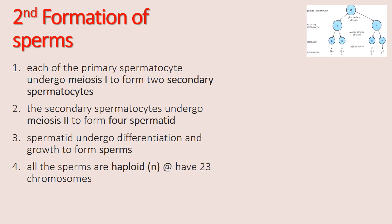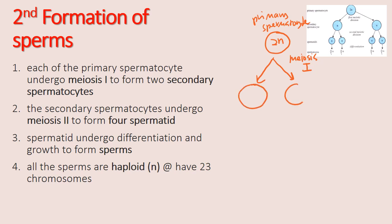Each of the primary spermatocytes formed by the growth process of the spermatogonia will undergo meiosis one to form two secondary spermatocytes. This primary spermatocyte will undergo meiosis one to form two cells known as the secondary spermatocytes. Starting from meiosis one, the number of chromosomes becomes haploid, which means the chromosome number splits from 46 to 23.